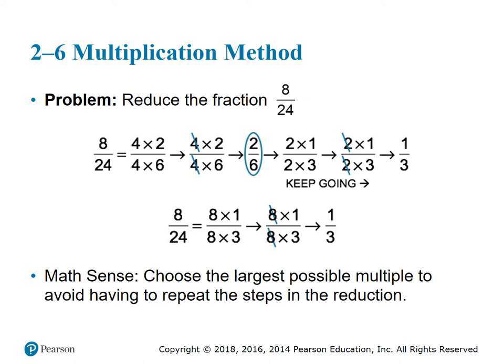Let's reduce 8/24 using the multiplication method. Write the fraction vertically: 8 over 24. Find a number that divides into both evenly — that number is 4. We write 4 times 2 on top (equals 8) and 4 times 6 on the bottom (equals 24). Cross out both 4s, leaving us with 2 over 6.